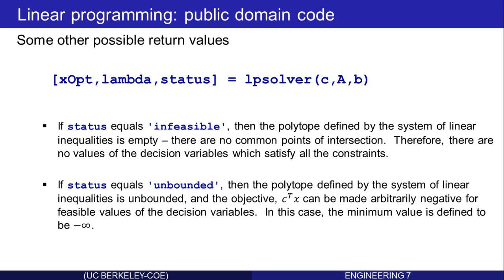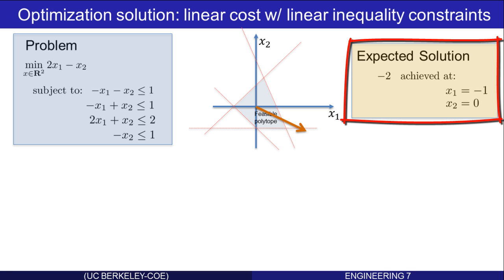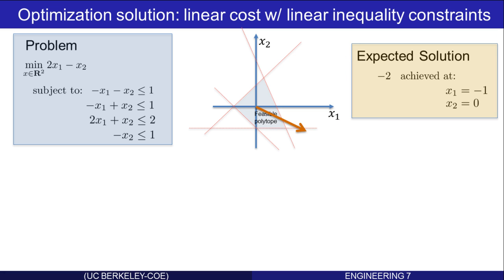Let's try solving the simple two-variable, four-constraint problem in MATLAB using LPSolver. First, let's remember exactly what the problem was. On the left is the problem as originally stated: minimize 2x1 minus x2, subject to four linear constraints. Because this problem only involves two dimensions and four constraints, it was easy to graphically construct the polytope, and then based on the direction of the C vector, infer that the optimal vertex is at the location negative one, zero, achieving a cost of negative two.